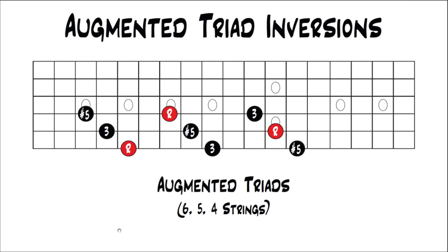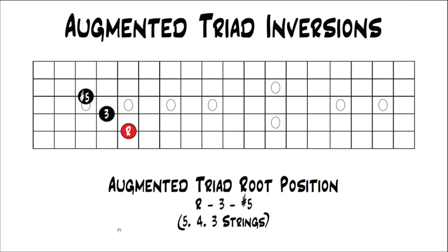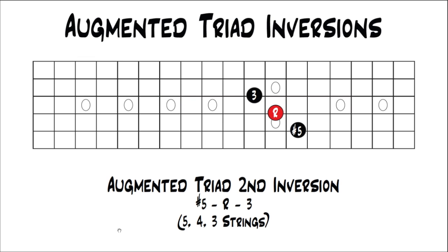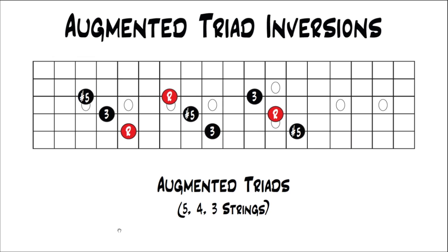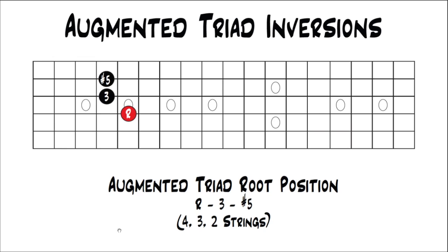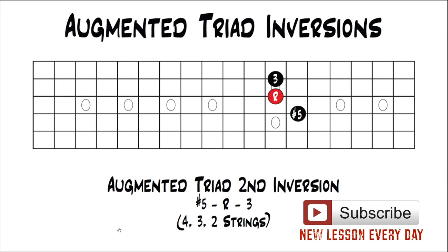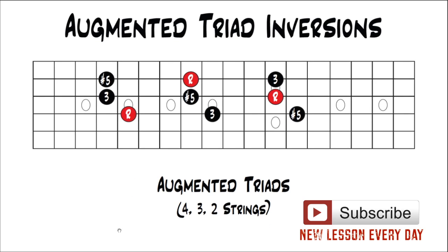You can do the same thing on all the string sets. Here it is on the 5th, 4th, and 3rd string in root position — move up a major third, same shape, now you have first inversion. Move up a major third, same shape, now you have second inversion. There's all of them together on those string sets. Then go to the next set of strings: root position, move up a major third — first inversion, move up a major third — second inversion. And there are all of those together on the same strings.